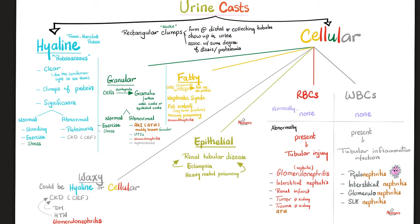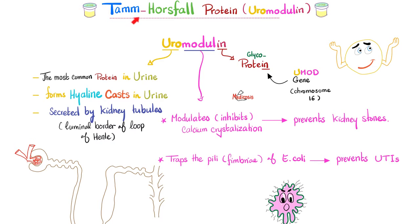What are the conditions that will make you see hyaline casts in the urine? Well, some of them are physiological and others are pathological. If you stand for a long time, you get orthostatic proteinuria — you'll see some protein in the urine and maybe some hyaline casts. Strenuous exercise and lots of stress can also lead to hyaline casts. Pathological causes include proteinuria and chronic kidney disease, where a bad kidney lets too much protein into the urine.